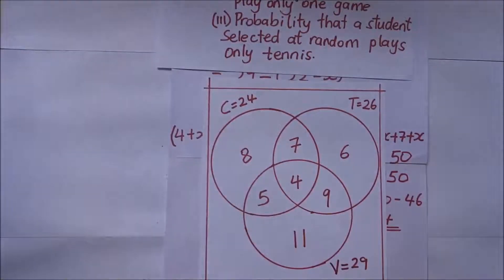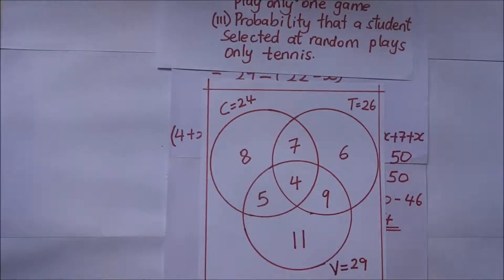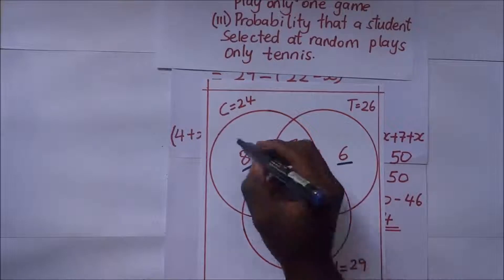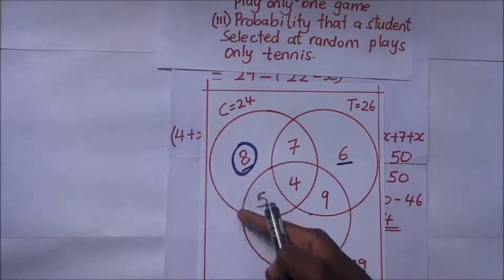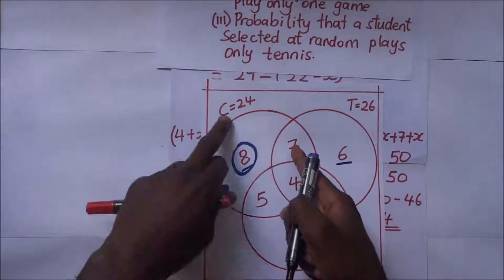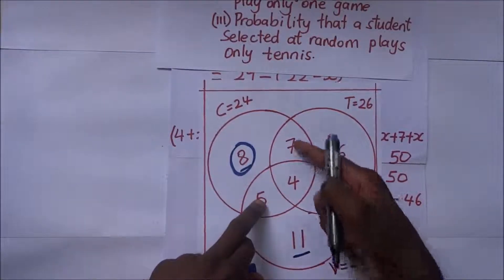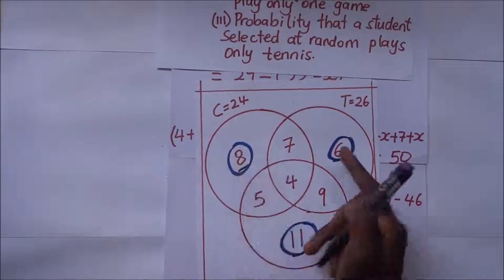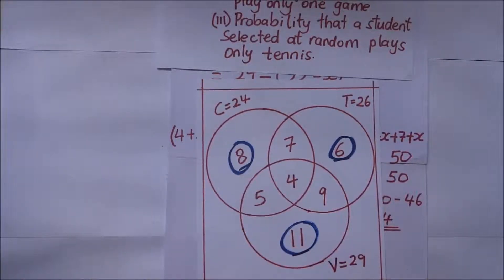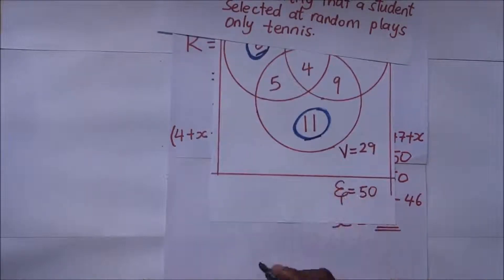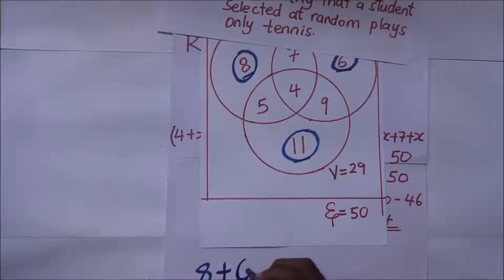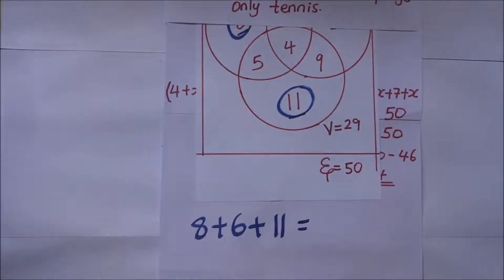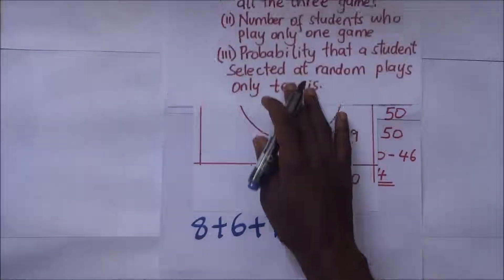For part three, we find the number of students who play only one game. Those are the students in the chess-only, tennis-only, and volleyball-only regions: 8 + 6 + 11 = 25. So 25 students play only one game.